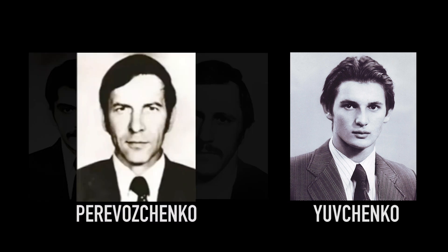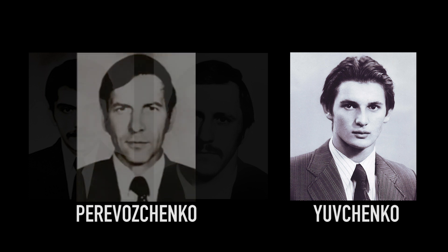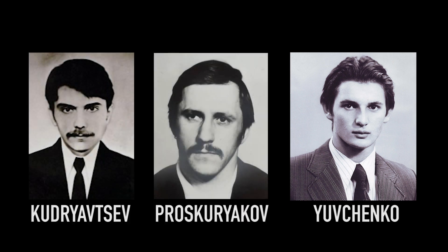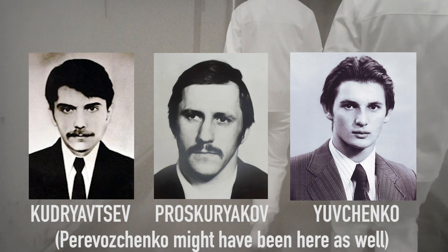Afterwards, he encounters Perevozchenko, who is vomiting and losing consciousness, but details of their interaction are not well documented. Eventually, he runs into the two junior technicians on their way to the reactor. Despite Yuvchenko's explanation that there are no control rods left, the men decide to continue anyways. Yuvchenko, knowing the full extent of the danger, makes the decision to accompany them.